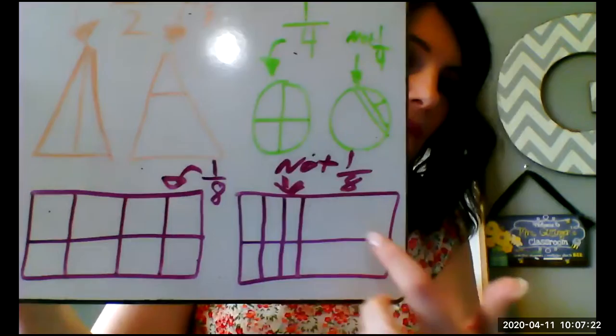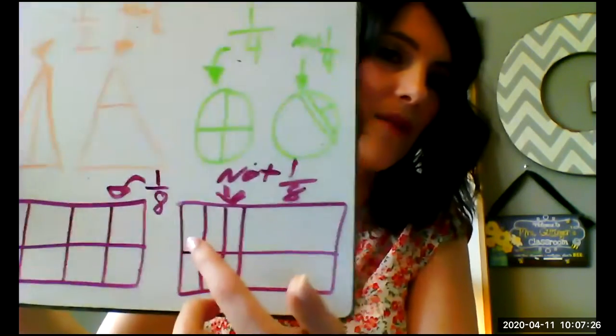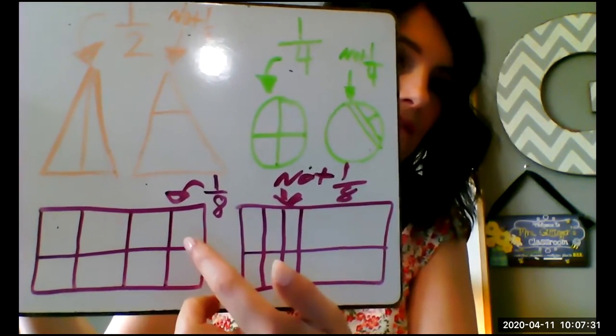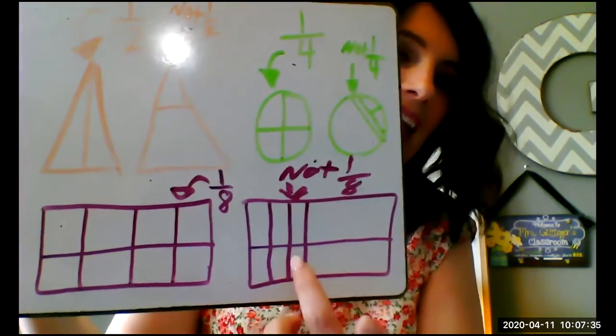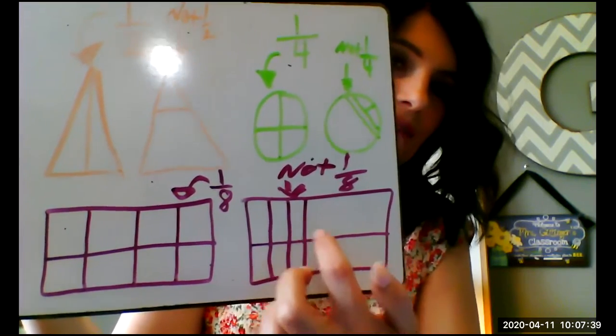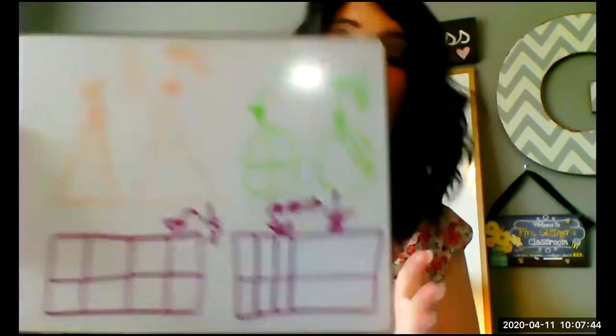So then we have down here eighths. I have eight boxes here and they're all the same size — as best as I can draw, they are the same size. And then here, this is not one eighth — look, I have a big space over here and little places over here, so that's not going to work. Just because something is divided up into eight parts doesn't mean they're equal; it doesn't mean it's actually an eighth.